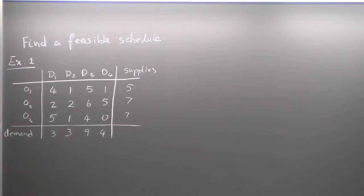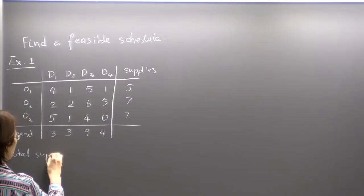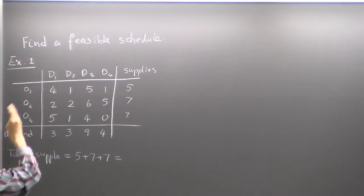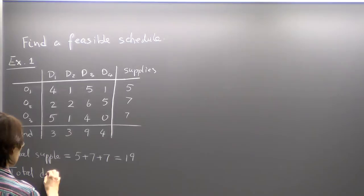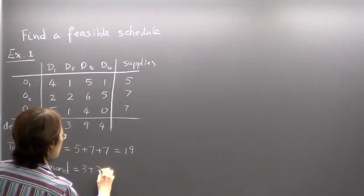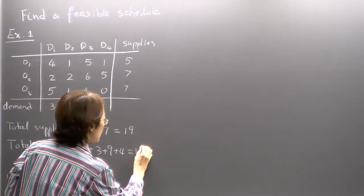Let's just take this as an example and work it out. What's inside here are capacities. So let's check the total supply — adding up all three numbers from origins 1 to 3. If I add them up, I see I have 19. And total demand: if the total supply is less than total demand, it's not feasible. So 3 plus 3 plus 9 plus 4 gives 19. So they're equal, meaning it's possible to have a feasible schedule.